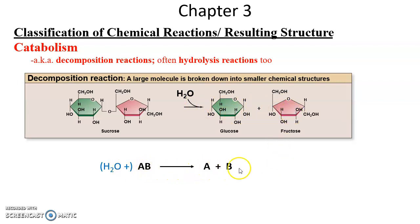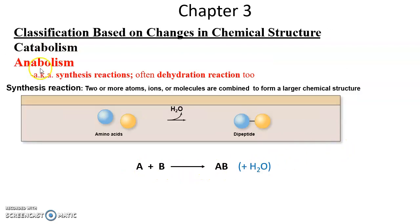Anabolism: adding things together is types of synthesis reactions, often dehydration reactions, so often water is produced during this process. We have two amino acids. They get bound together. In the process, water is lost, leading to a dipeptide—that peptide bond between the two amino acids. So A plus B becomes product AB, and some water is also produced. Catabolism cuts them up, anabolism adds them together.